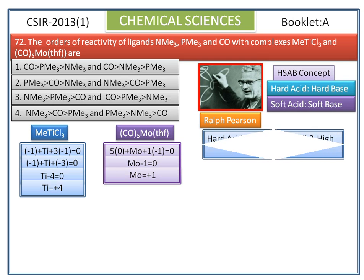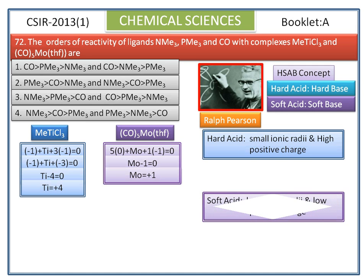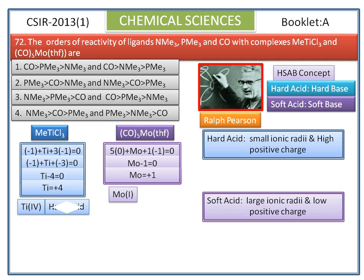Hard acid is defined as an acceptor atom of high positive charge, small size, and does not have easily excited outer electrons. Soft acid is defined as an acceptor atom of low positive charge, large size, and has several easily excited outer electrons. Titanium has higher positive charge, molybdenum has lower positive charge. So, titanium is hard acid and molybdenum is soft acid.